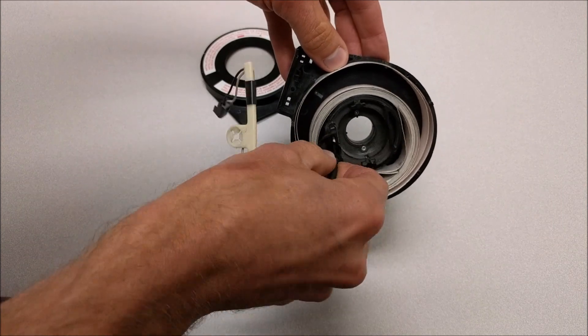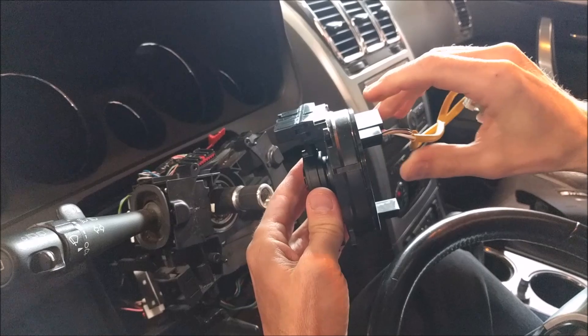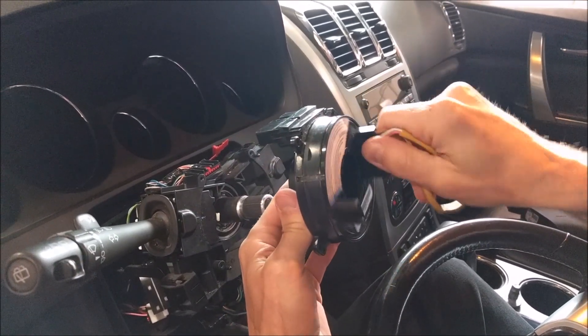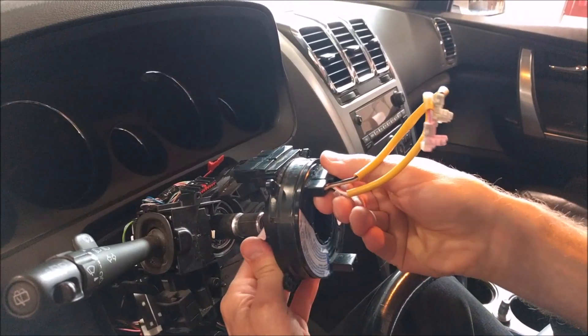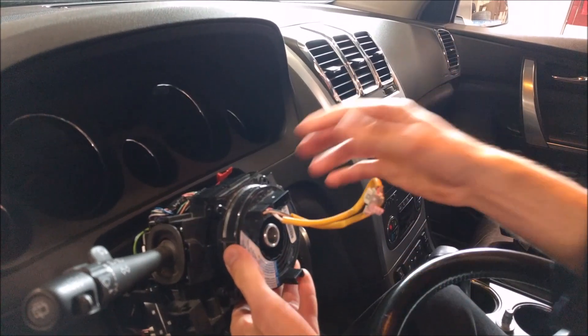You can also see how if you did turn it too far it could overextend the ribbon and break the conductors. Just a word of caution when you do take these off you don't want to allow them to become turned and then reinstalled maybe even a full revolution off like that. Once you install it then you would turn the steering wheel and it would break the clock spring inside.